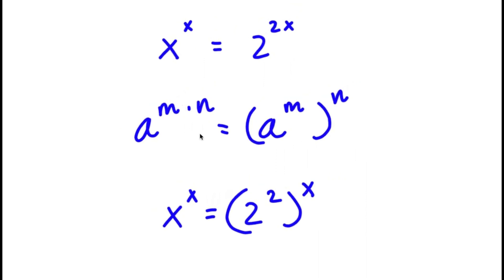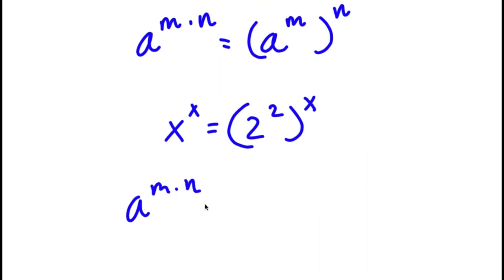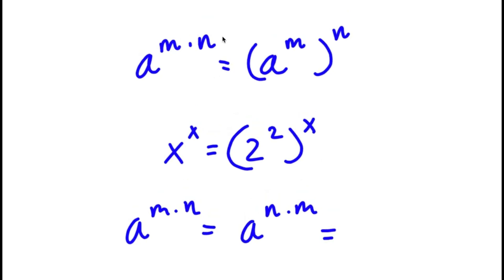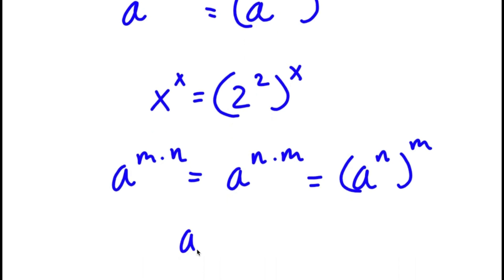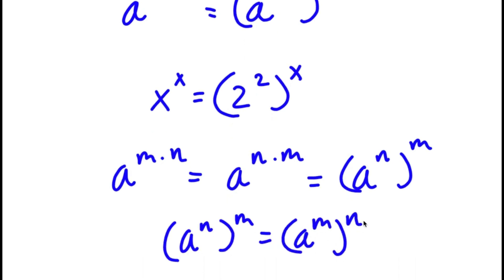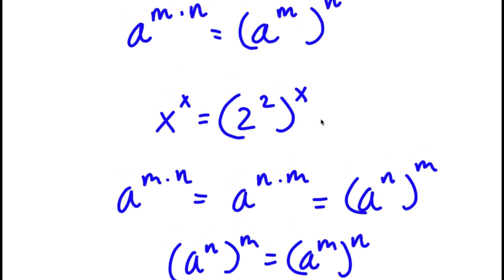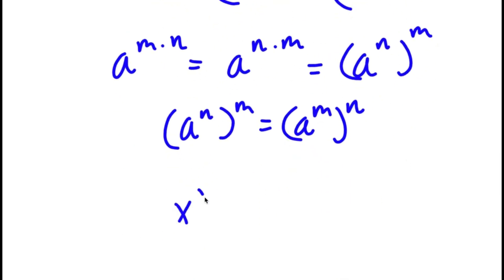Now, a to the power of m times n is also equal to a to the power of n times m — we could switch the order of these two. So if a to the power of m times n equals a to the power of m to the power of n, then a to the power of n to the power of m equals a to the power of m to the power of n. So 2 to the power of 2 to the power of x is the same thing as 2 to the power of x to the power of 2. So now I have x to the power of x is equal to 2 to the power of x to the power of 2.